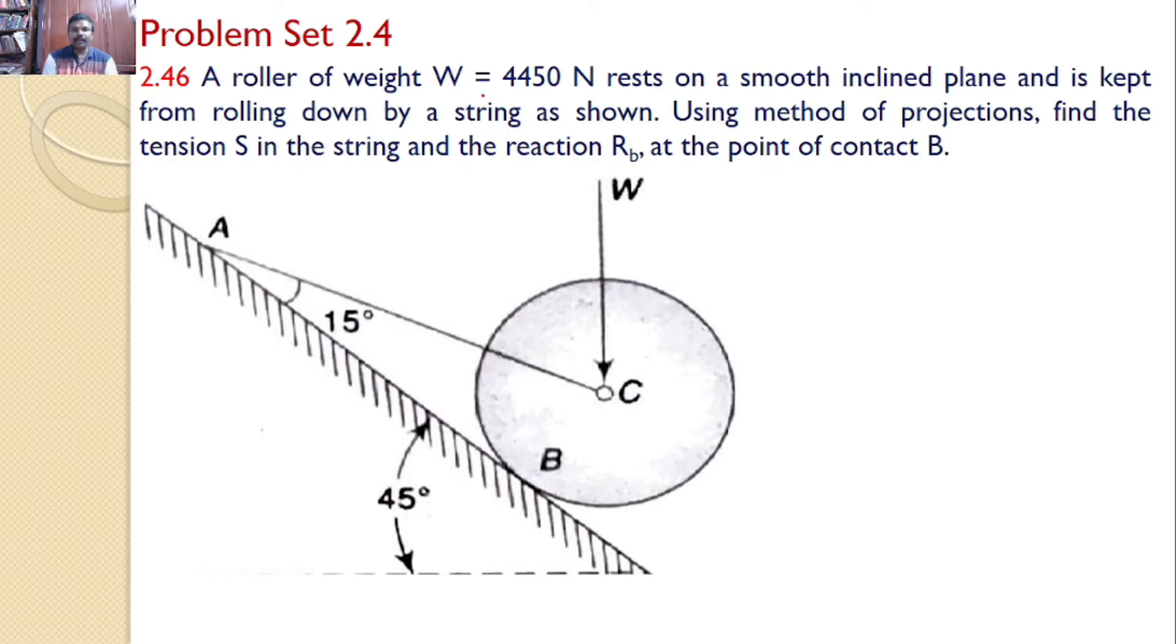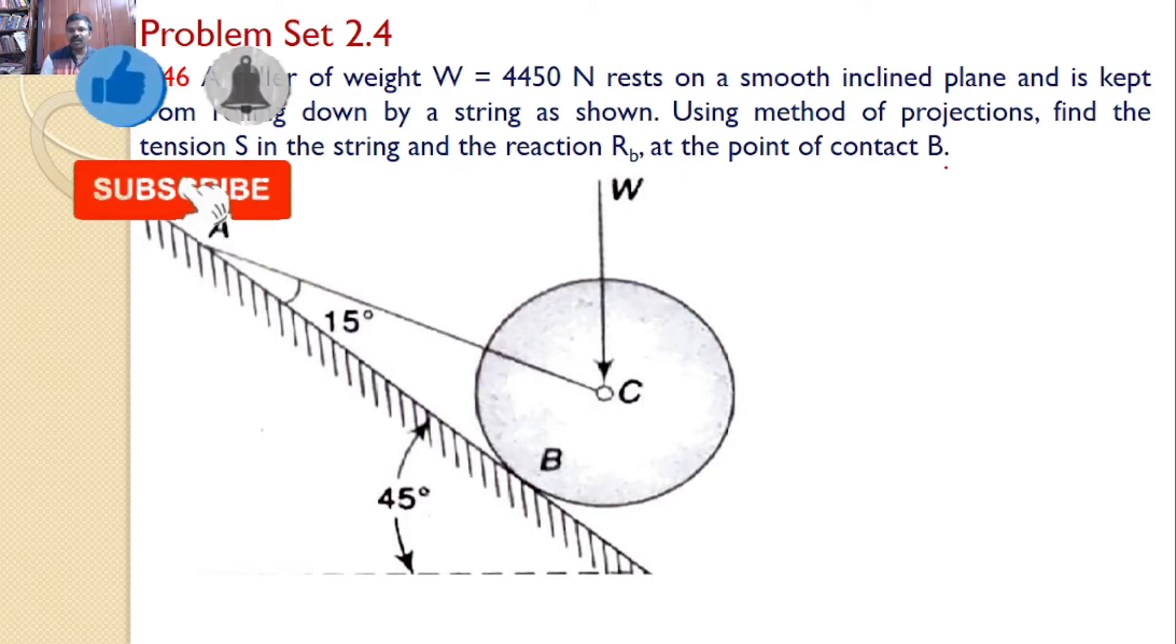A roller of weight W equal to 4450 Newtons rests on a smooth inclined plane and is kept from rolling down by a string as shown. Using method of projections, find the tension S in the string and the reaction Rb at the point of contact B.